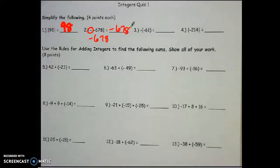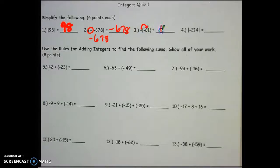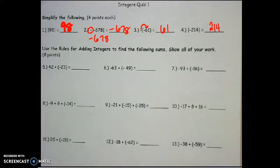Number 3 — those are parentheses, not absolute value signs, which means we take the opposite. What's the opposite of negative 61? That is positive 61. And number 4, the absolute value of negative 214 is positive 214, because absolute value is always positive.